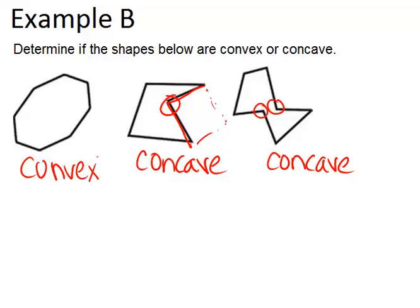Now, the technical definition of concave versus convex is if you can take two vertices, which are two of the points of the polygon, and connect them with a line that is outside of the shape, then that polygon is concave.